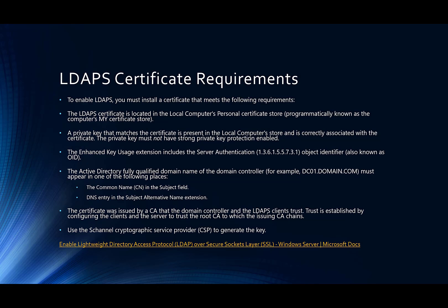There are really two places where you can store names or identity information: one is the subject name, and the other is the subject alternative name. Typically for TLS certificates, which is essentially what we're doing here, if the SAN is populated then the subject is ignored. So generally, if you're deploying certificates for any sort of TLS, just put all the names you want to use in the subject alternative name field.